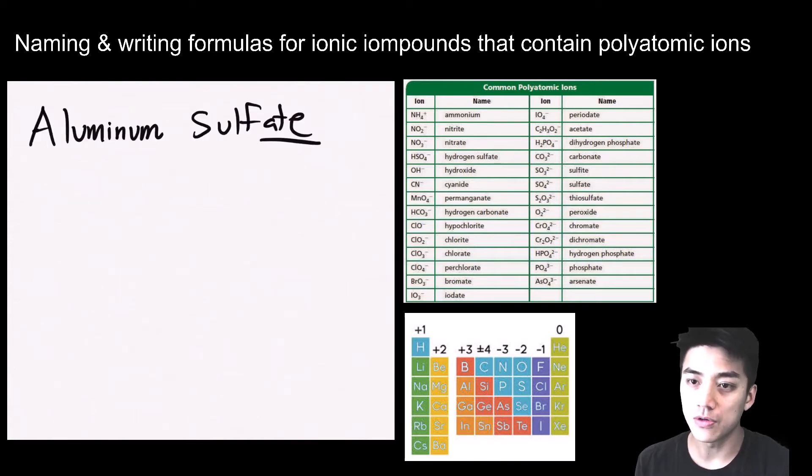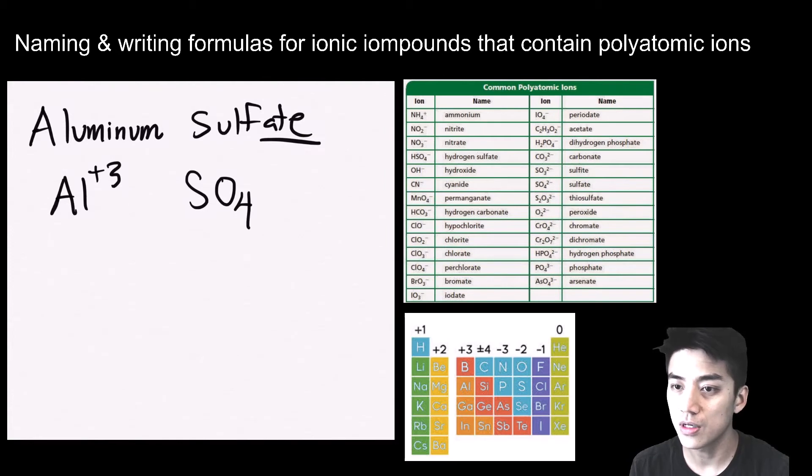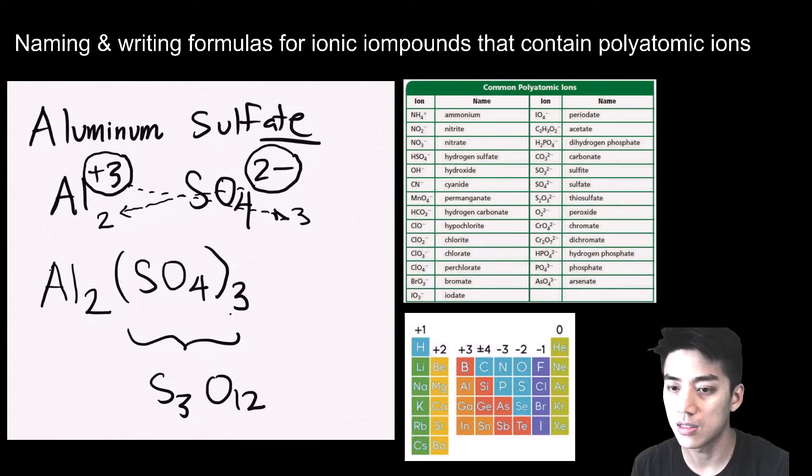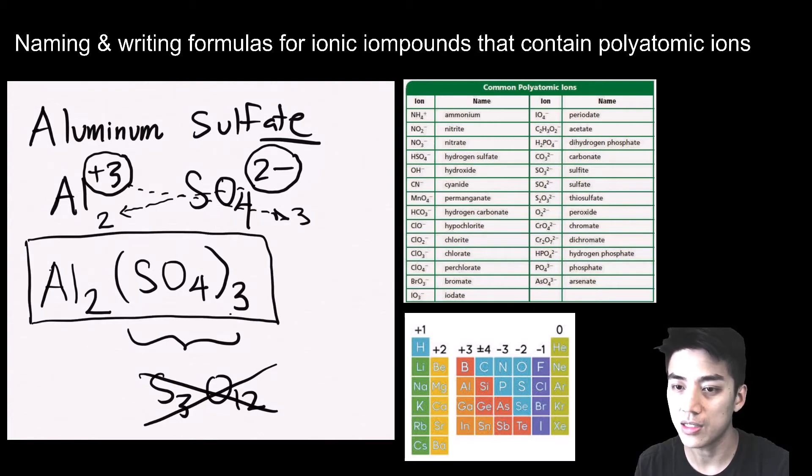Let's keep going. Aluminum sulfate. Aluminum is Al with a plus 3 charge. Sulfate is SO4 with a charge of negative 2. I'm going to circle their charges to keep track easier, then cross them over. Write down exactly what I see, then clean it up. Because I have multiples of this polyatomic, I'm going to put them in parentheses and call that a 3. So aluminum sulfate is Al2(SO4)3. You can distribute that 3 and think of 3 sulfurs and 12 oxygens, but do not write it like that when you're writing out formulas.